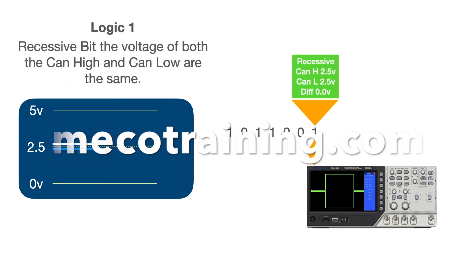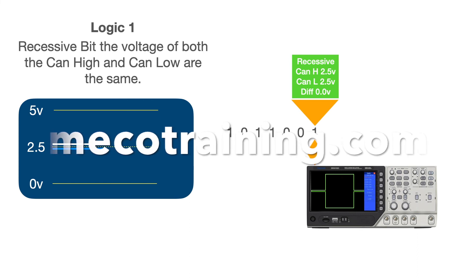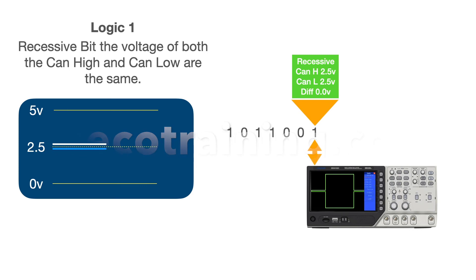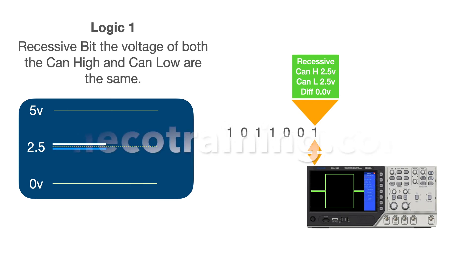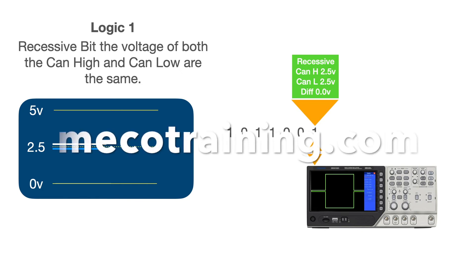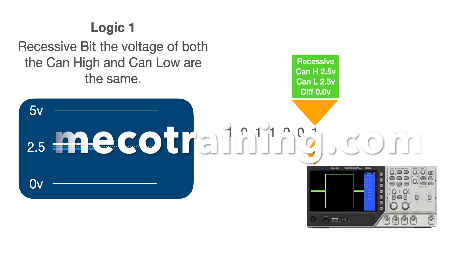Back to a logic one recessive bit, shown here by zero voltage between the CAN High and CAN Low wires. It is possible to analyze these pulses with a small computer-controlled oscilloscope, and this is a great way to find faults in devices or cabling. There is much more on this later in the course.